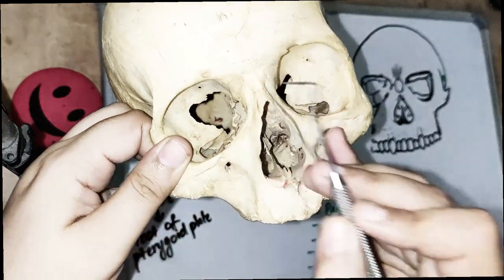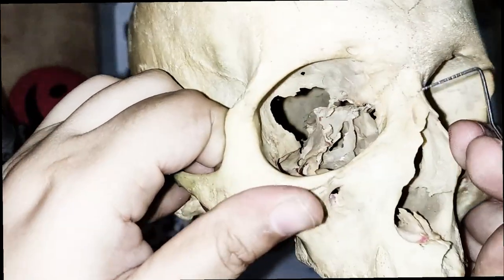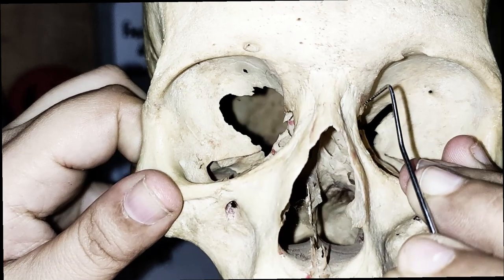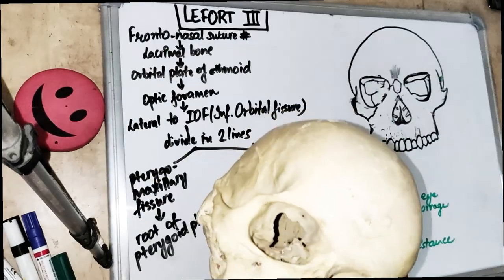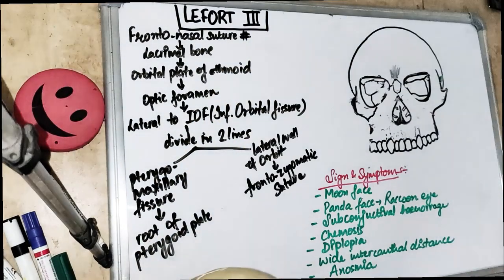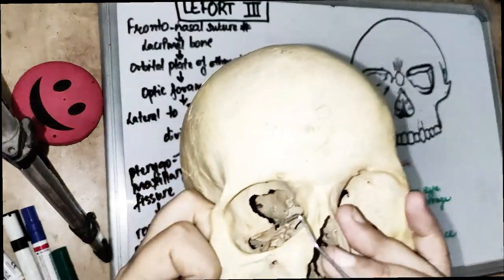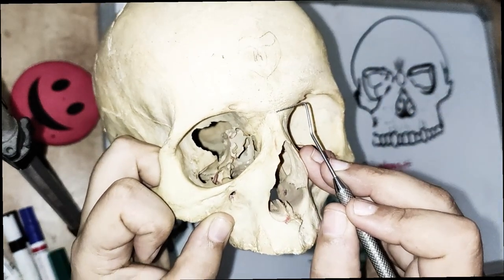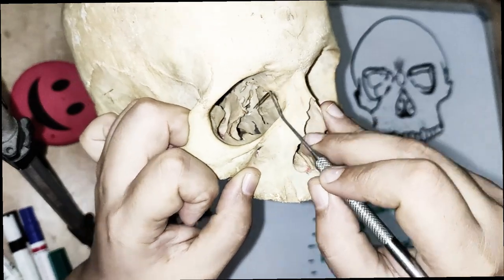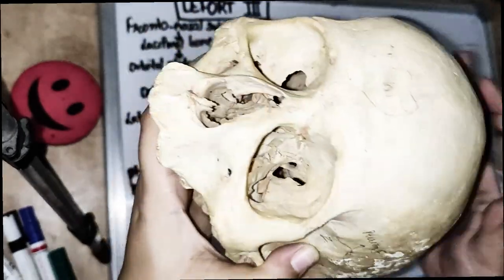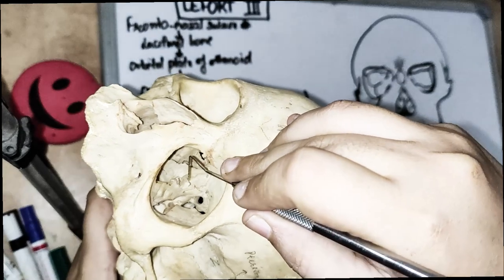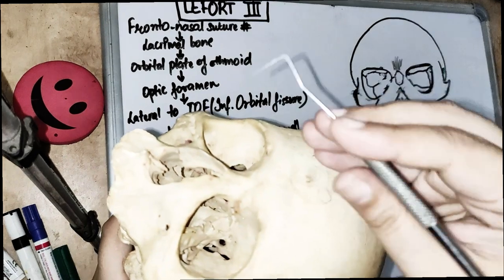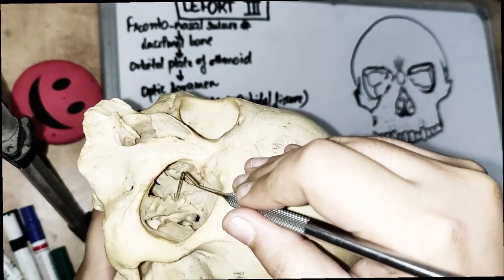Le Fort 3 is basically caused by a blow to the face. The fracture starts from the frontonasal suture — if any injury occurs at the level of the orbit or a strong blow occurs toward the frontal or nasal bone, it results in a Le Fort 3 fracture. The fracture line runs from the frontonasal suture across the nasal bone, goes towards the lacrimal bone, and then through the thin orbital plate of the ethmoid bone — which is already fractured.